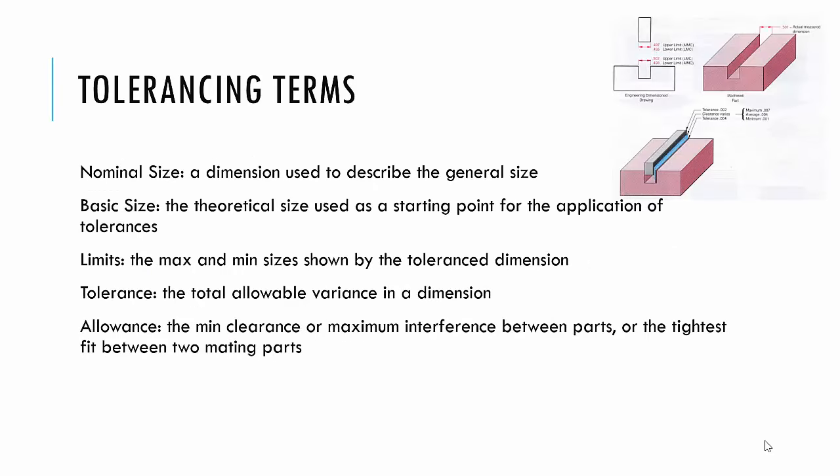Here are some tolerancing terms for you. We have a nominal size, a basic size, limits, a tolerance, and an allowance. Nominal size is the dimension we use to describe the general size. Basic size is like basic dimension—it's the theoretical size we use as a starting point for the application of all the tolerances. Limits are the max and the min shown by the tolerance dimension. Tolerance is an allowable variance in the dimension, and the allowance is the minimum clearance or the maximum interference between parts, or the tightest fit between two mating parts.